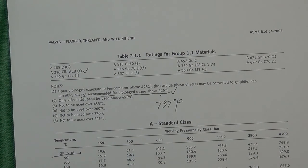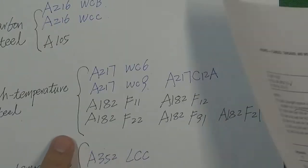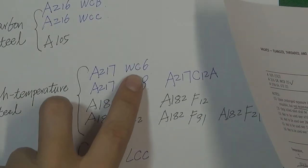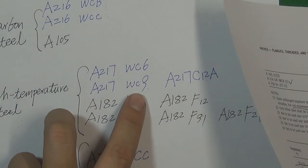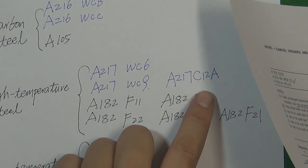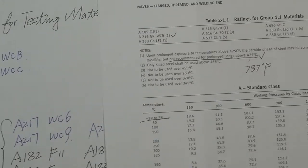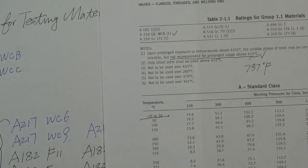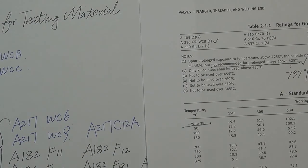The alternative material is high temperature steel — for example WC6, WC9, and also a very capable steel called C12A. Let's look at the temperature pressure rating table for those three different materials.